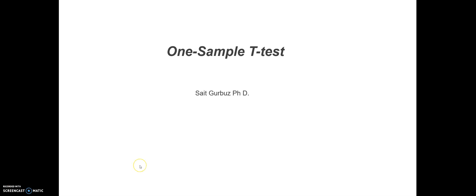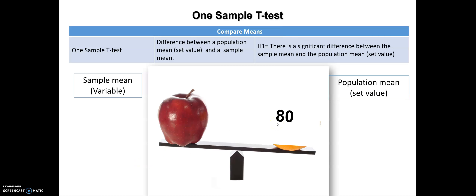Hello everyone, this is Dr. Gurbus. Welcome to my video on conducting a one-sample t-test using SPSS. Let's first understand what a one-sample t-test means and when we need to use it. We use a one-sample t-test to determine if there is a significant difference between a population mean, which is a known or set value, and a sample mean. In a one-sample t-test, we have only one dependent variable, which is the sample mean.